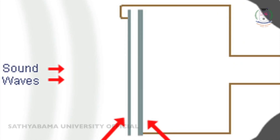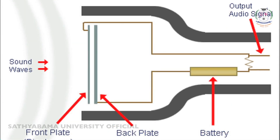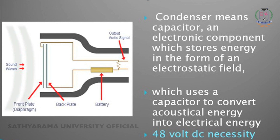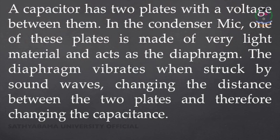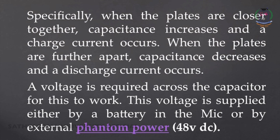Now let us look at the condenser microphone. In the condenser microphone, there is a front plate and back plate. The back plate works as a capacitor which is attached with battery power. A capacitor has two plates with voltage between them. One of the plates is made of very light material acting like a diaphragm. The diaphragm vibrates when struck by sound waves, changing the distance between the two plates and therefore changing the capacitance. Specifically, when the plates are closer together, capacitance increases and a charge current occurs. When the plates are further apart, capacitance decreases and discharge of current occurs.